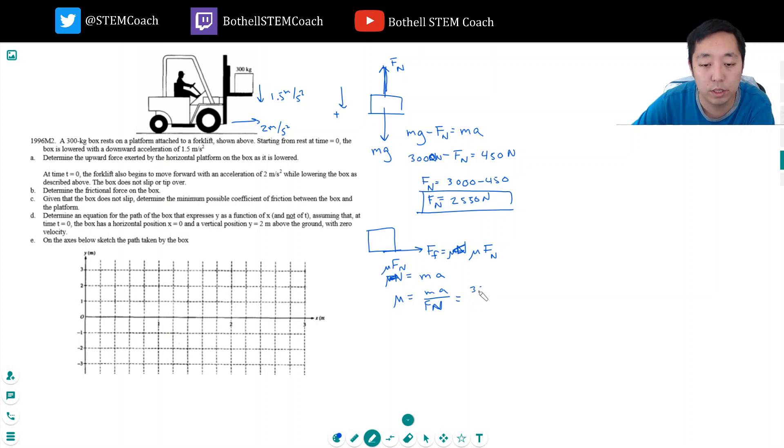So ma equals fn. This is 300 kilograms times 2 meters per second squared over the normal force, which we already found from part a was 2550 newtons, because nothing changed in the y-direction. Everything we did in part a holds even though we're starting to accelerate to the right. So mu is equal to 600 over 2550. Cancel zero, divide by 5, I get 12 over 51. 51 divided by 3, that's 4 over 17. So mu is 4 over 17.